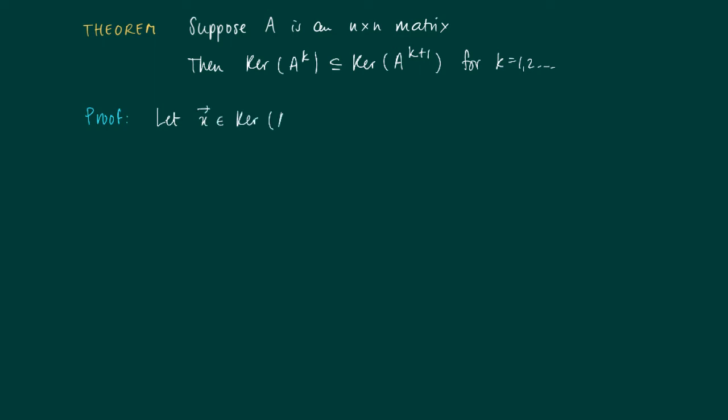Well, suppose we have a vector x in the kernel of A to the power k, so we know that A to the power k times x equals the zero vector. But then we can also calculate A to the power k plus 1 times x, which equals A times A to the power k times x. Which, this is 0, the zero vector, so we get A times the zero vector equals 0.